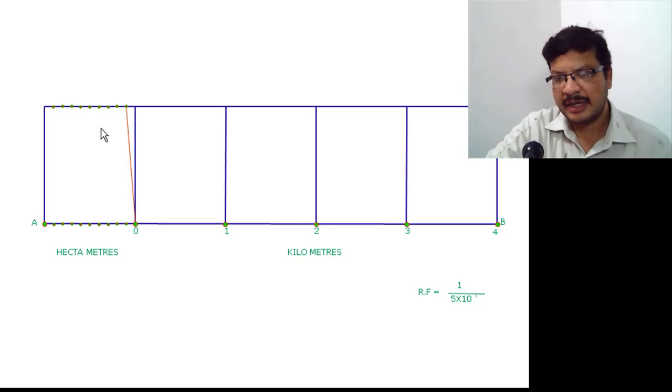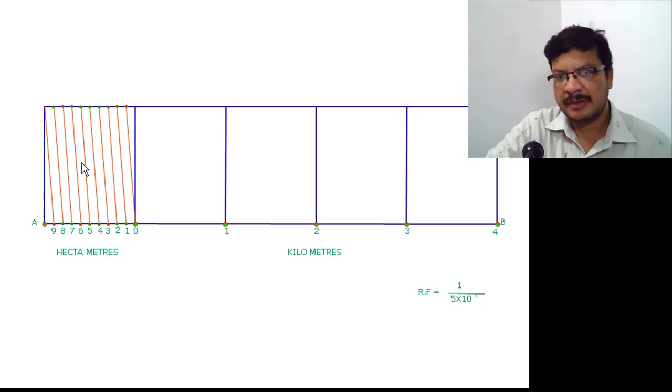So 0 to 1 one inclined line. Then 1 to 2, 2 to 3, 3 to 4, 4 to 5, 5 to 6, 6 to 7, 7 to 8, 8 to 9, 9 to 10. In this way draw the inclined lines.